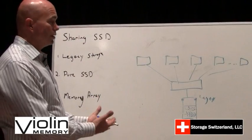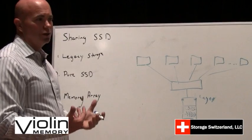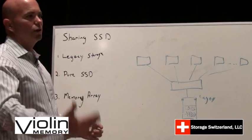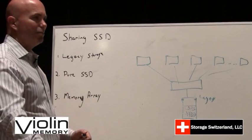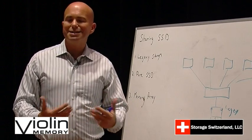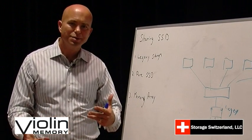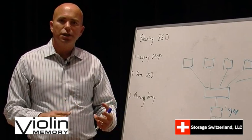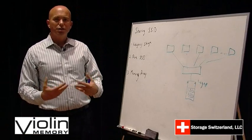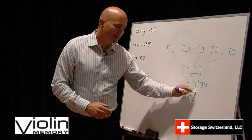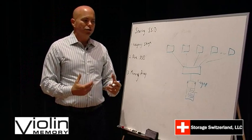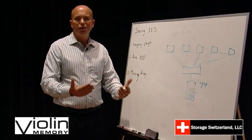Initially, most legacy storage systems used something called static placement, where you manually decided what data needed to go to the solid-state disk drives and copied it there. The problem with that is, number one, all data isn't active all the time — different data gets active at different times — and number two, you have to manually manage that process. This was particularly challenging in the legacy environment because the capacities were relatively small, so the amount you could copy was limited.